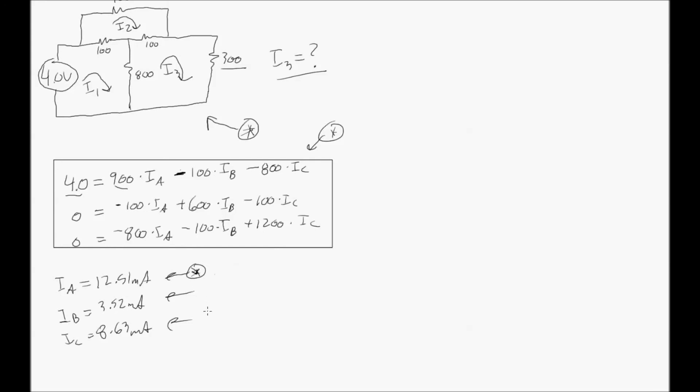And the current flowing through the 300 ohm resistor as we found before? Same answer. I think we got 8.64 milliamps in the last method using the mesh analysis method. Exactly the same. Just a little rounding error. 8.63.